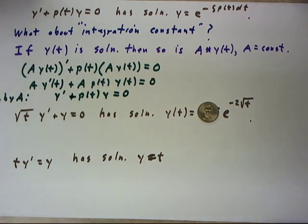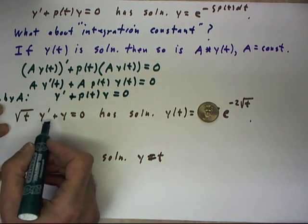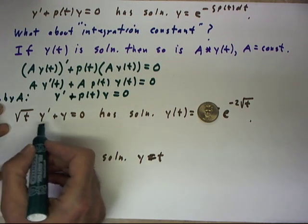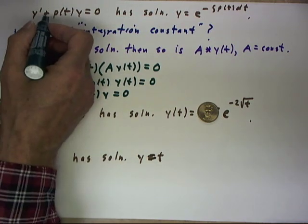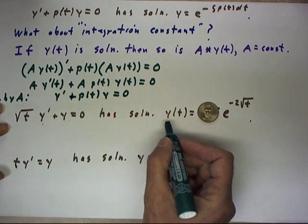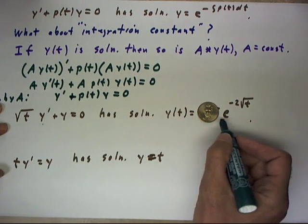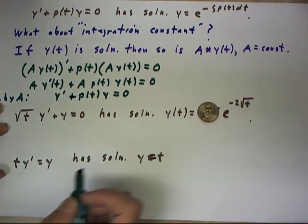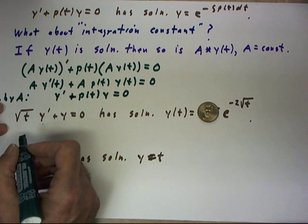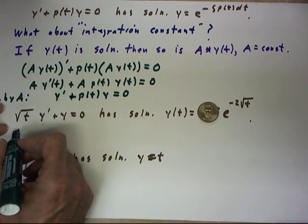Now, the square root of t y' + y = 0 was previously put into the form of a linear homogeneous equation. It had solution y(t) = e^(-2√t), so what would the general solution be?